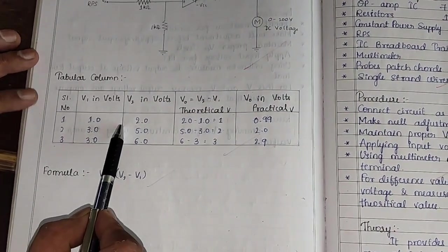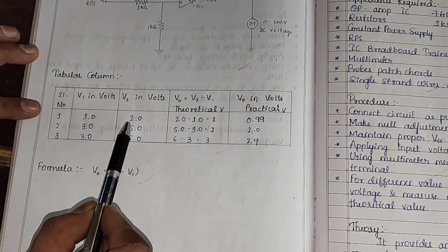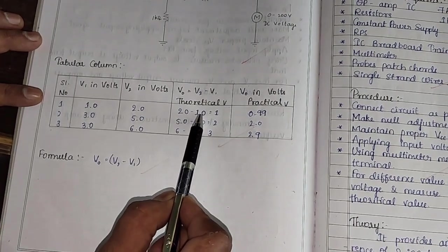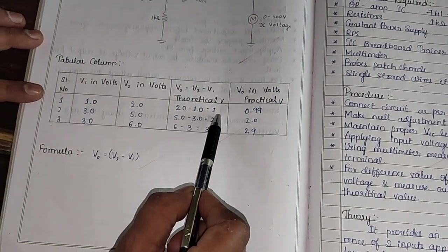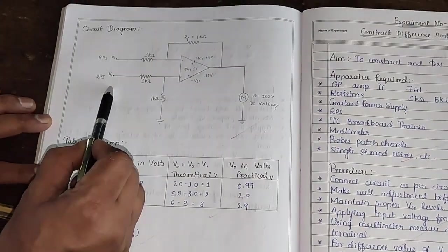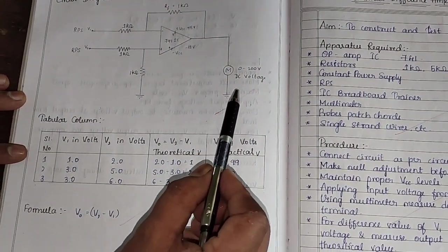For instance, if I apply V1 as 1 volt, V2 as 2 volt that means V2 minus V1 that will become 1 volt. In this way, we apply different voltages at the input and observe the output. Now let's do this practically.